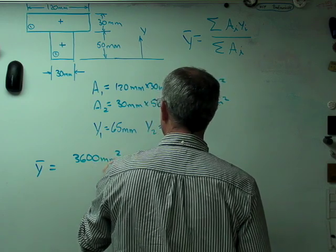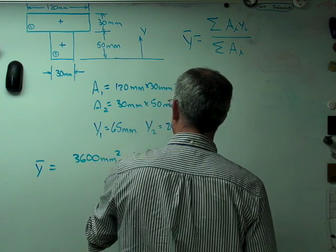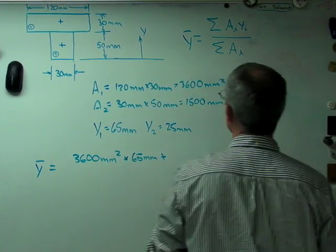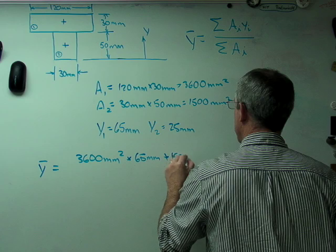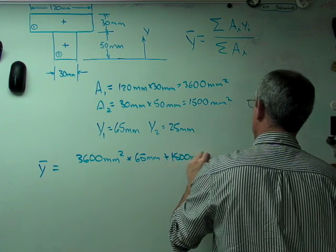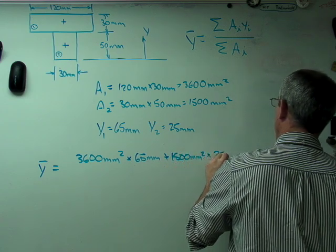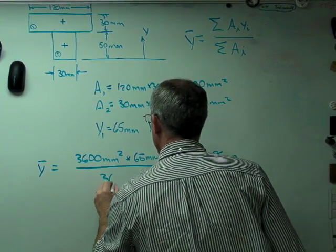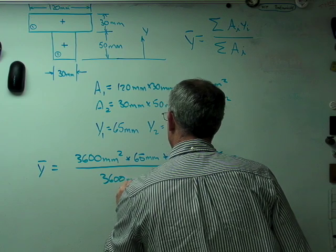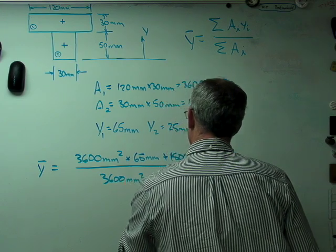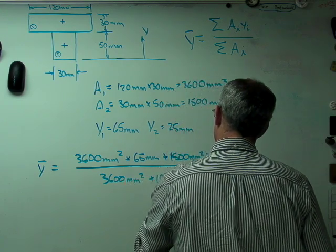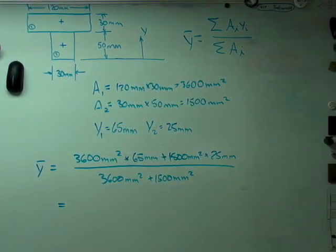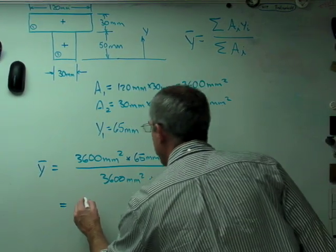And that looks like this: 3600 millimeters squared, because that's A1 times Y1, which is 65 millimeters, plus A2, which is 1500, times Y2, which is 25. Divide that all by the sum of the two areas. If you work all that out, you get 53.235 millimeters.